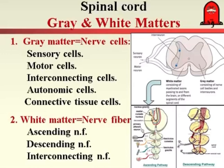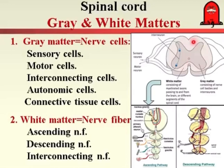The white matter of the spinal cord is formed of the myelin of nerve fibers. So the white matter contains, instead of nerve cell bodies, ascending or descending nerve fibers. The white matter is formed from ascending, descending, or interconnecting nerve fibers that connect the different segments with each other. So the cross section is formed of cells in the gray matter, and nerve fibers — ascending, descending, and interconnecting — in the white matter of the spinal cord.